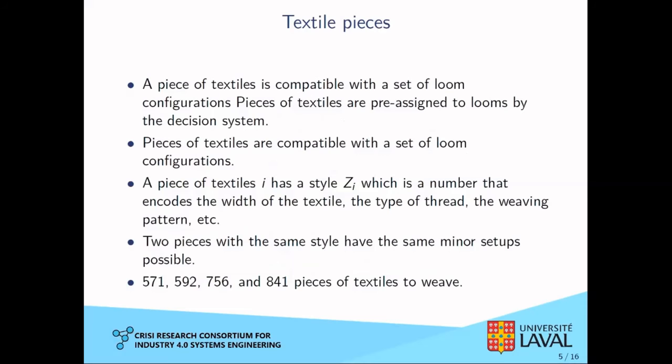Pieces of textiles are compatible with a set of loom configurations, and we already know which task will be executed on which loom. Tasks are scheduled either before or after the major setup according to their compatibility. Pieces of textiles have a style which includes thread type, color, weaving pattern, and more. Two tasks with the same style are basically identical.